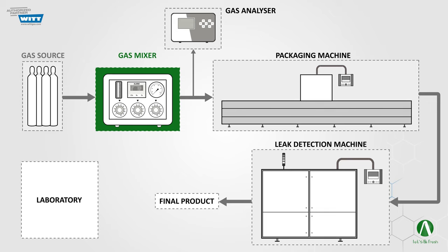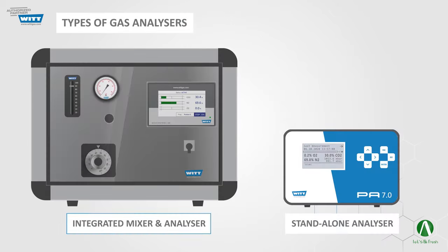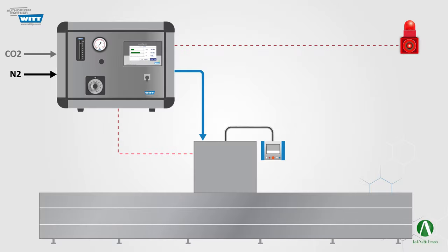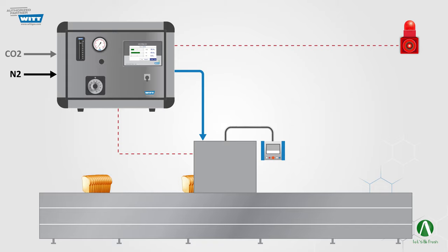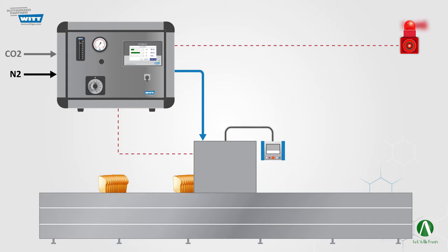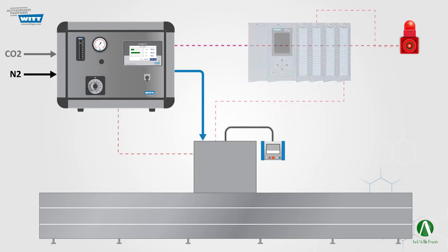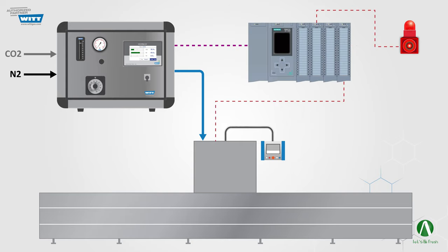The next component is the gas analyzer, which could be integrated into the gas mixer or used as a standalone unit for monitoring the exact real-time percentages of the gases. Equipped with measurement sensors, the analyzer works in conjunction with the mixer, and in case of any anomalies in the gas mixture, it will inform the operator through activating an alarm, or will directly shut down the whole or a specific part of the system. The analyzer can be connected to a PLC as well and integrated into the main control system.